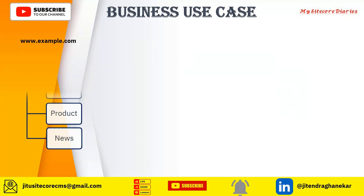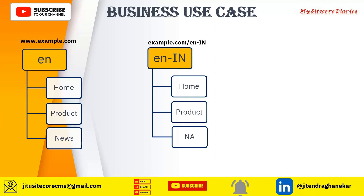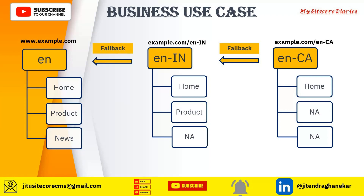So we have www.example.com — this is the English website and assume we have three pages: home, product, and news, all set up by global content authors. We have example.com/EN-IN, that is the English India website. Here the homepage is different, the product page is different, but news comes from the global. And then we have EN-CA, the Canada English site. Here only the homepage is different; both product and news content should come from the India website. So for EN-CA, the fallback should be EN-IN, and for EN-IN, the fallback should be EN.